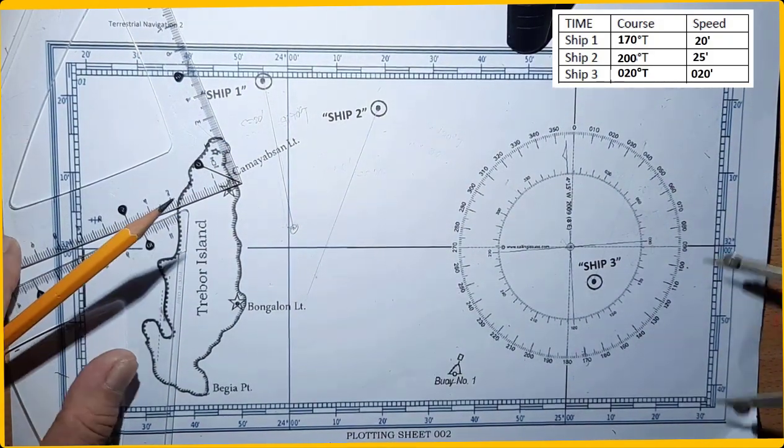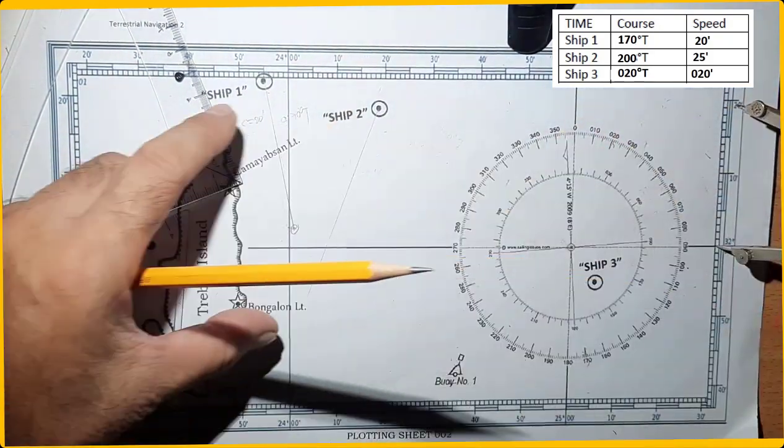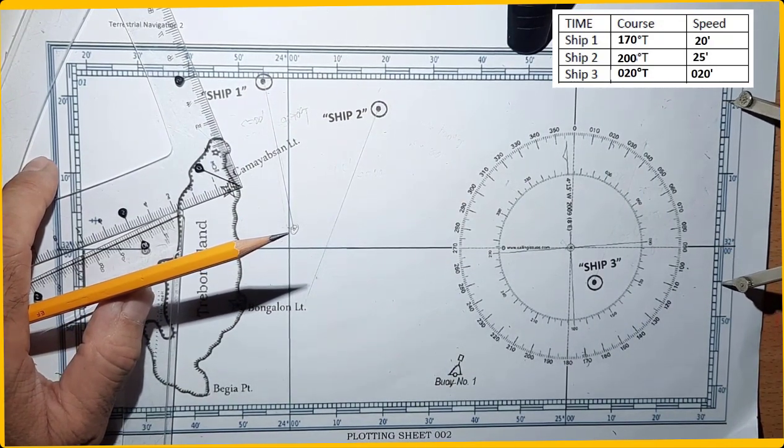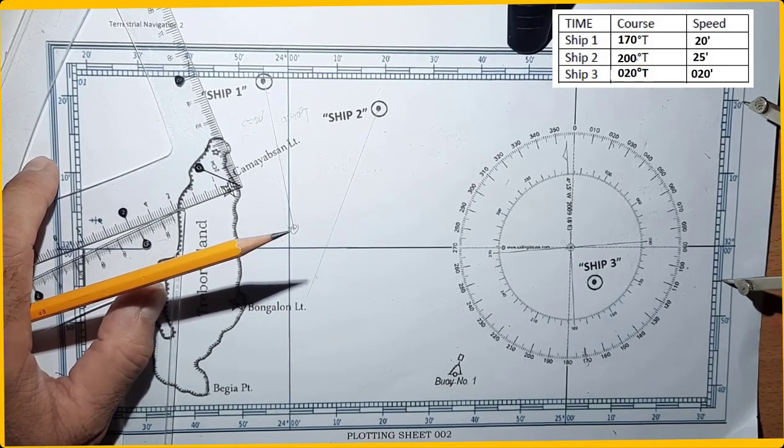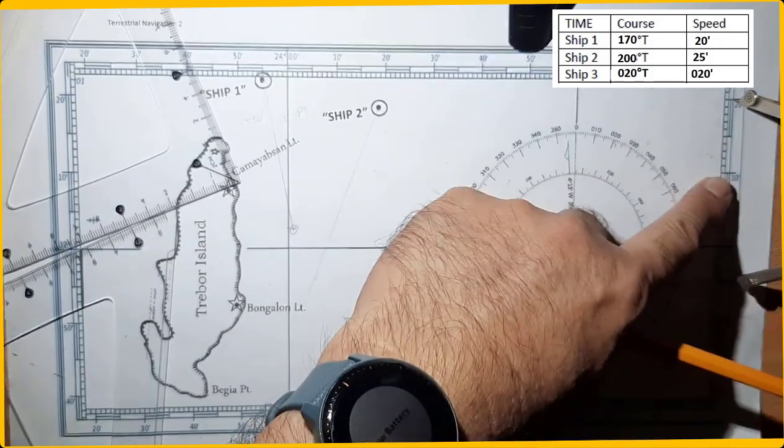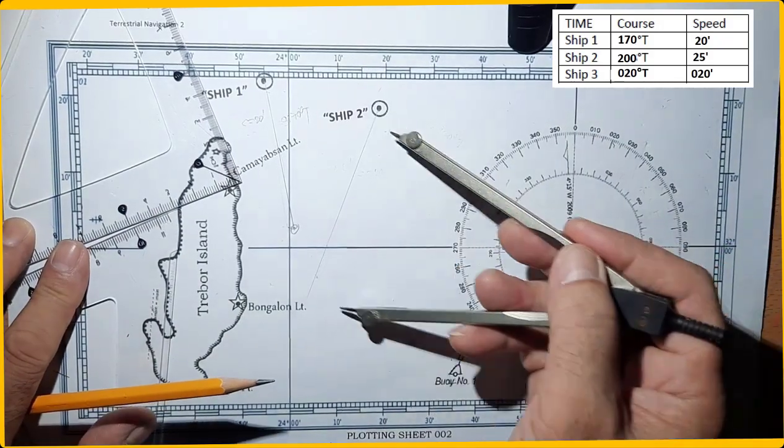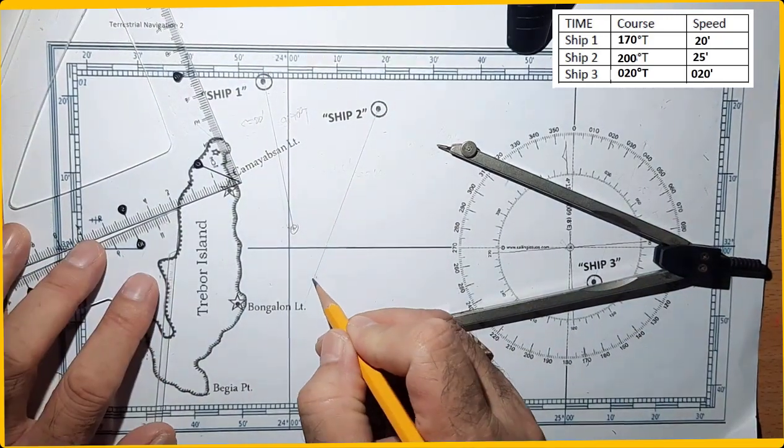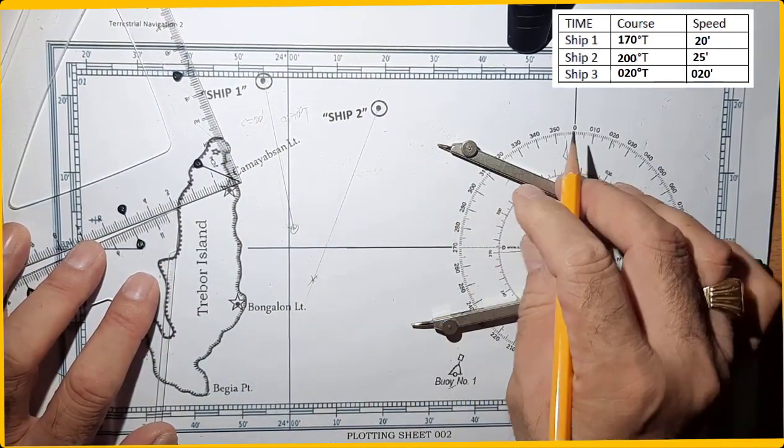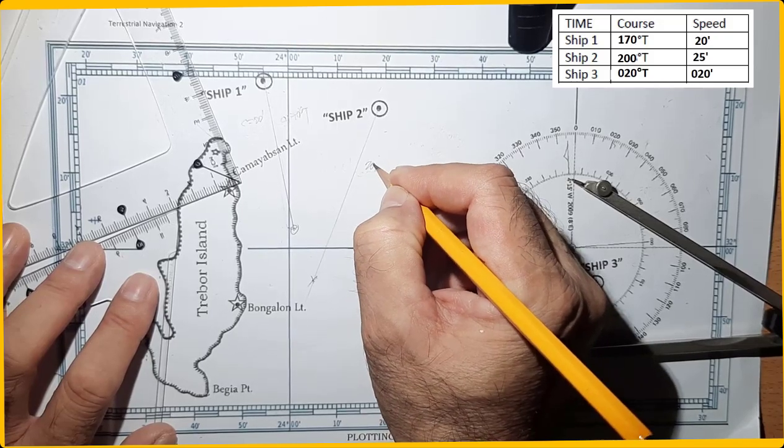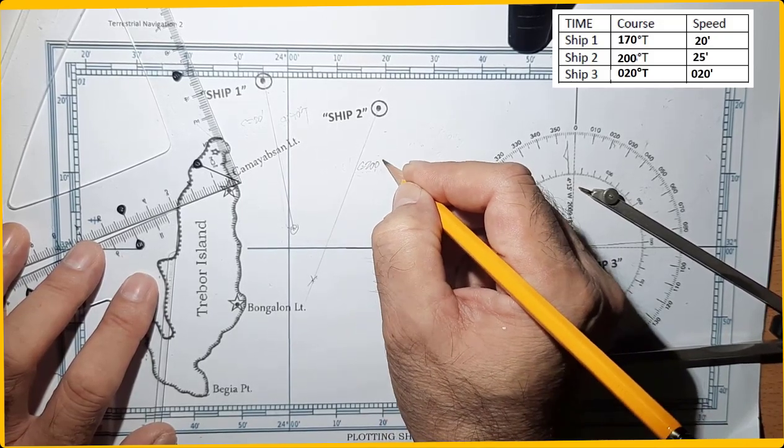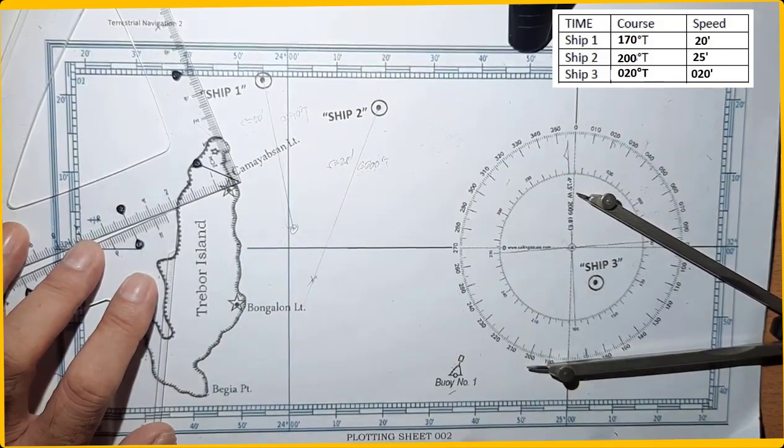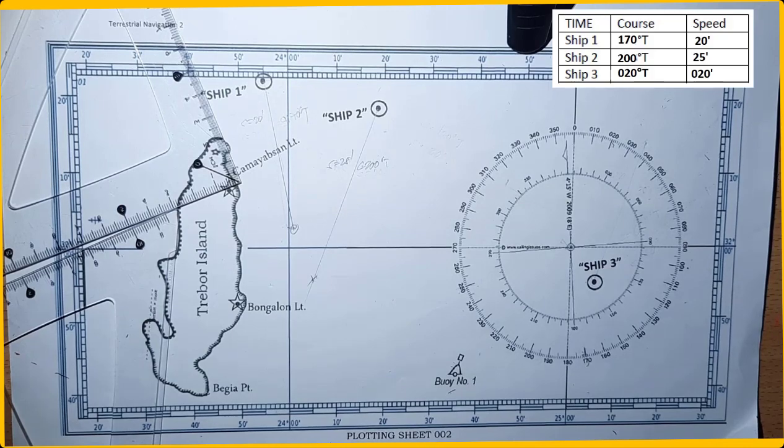Speed is 25, same level. So this is 20, you can just move to 25, or here, this is 10, 20, 25. So here, then you mark. Then you have now your course line which is 200, of course, 200 degrees true, then speed of 25 knots. That's ship 2.